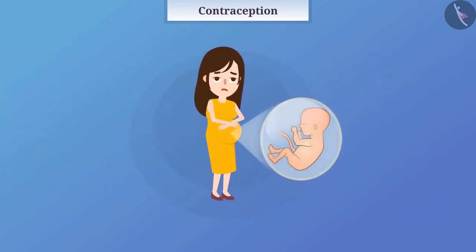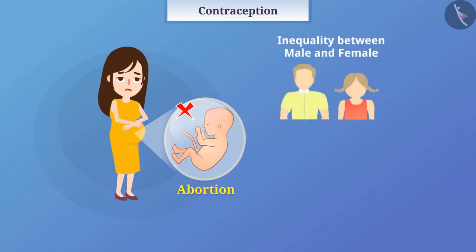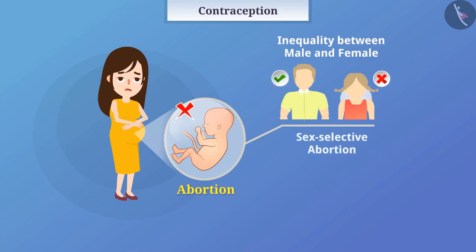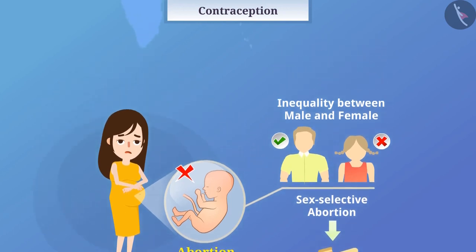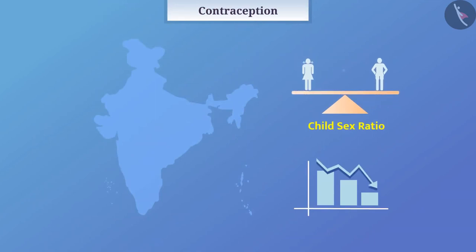Surgically, an unwanted fetus can also be removed from the uterus. This is called abortion. Due to inequality between male and female in society, some people perform sex-selective abortion of the female fetus after performing a test for determining the sex of the fetus. This is illegal. Due to this, the child sex ratio in our country is decreasing sharply. We need to maintain the male-female sex ratio for a healthy society.